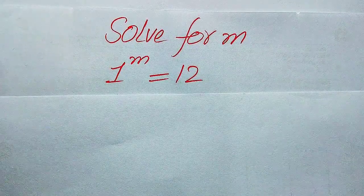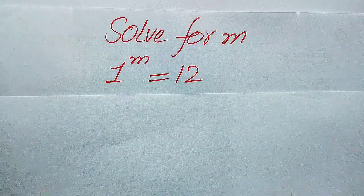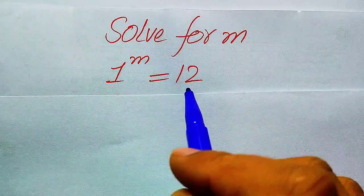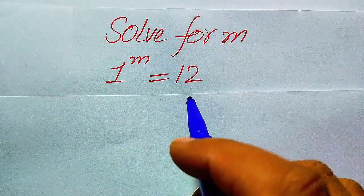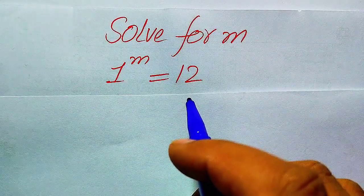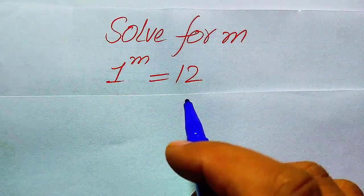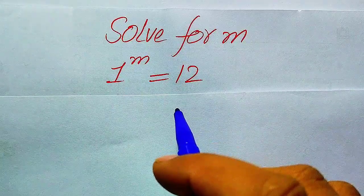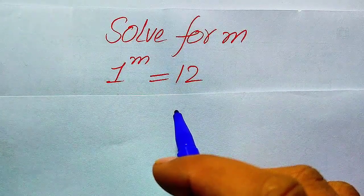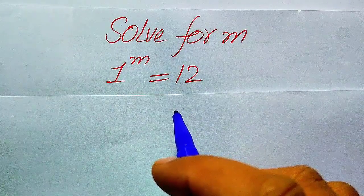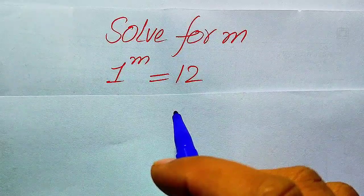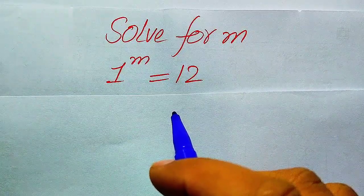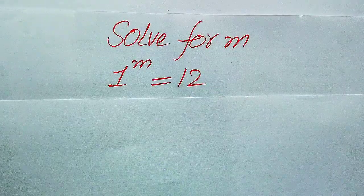Hello everyone. How to solve this problem: for what values of m is 1 to the power of m equals to 12? We solve this problem for all the values of m, finding all the roots of this equation. I hope you like this method, but if you have any other method in mind, please do not hesitate to write it in the comment section.